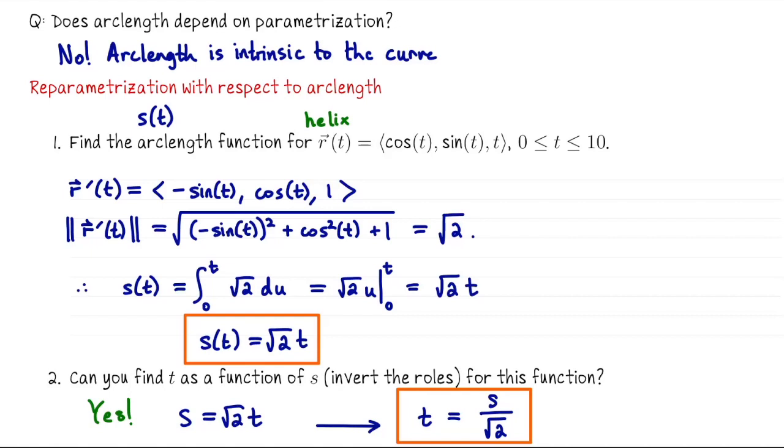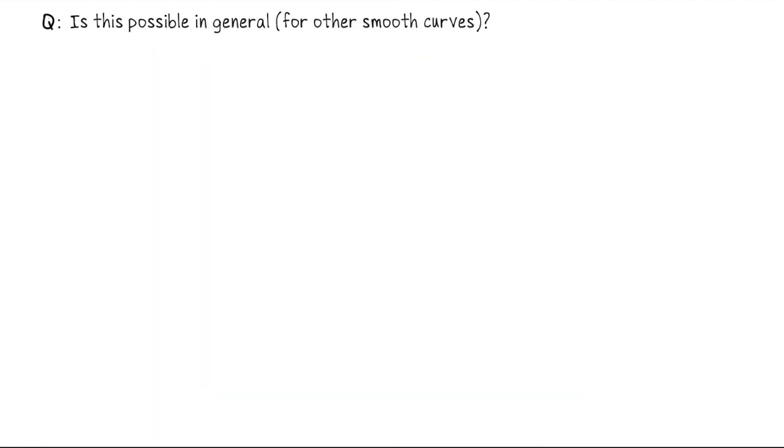Not every function is invertible. So next I want to discuss whether or not step 2 is always possible if we're planning to reparametrize a smooth curve with respect to arc length. So let's take a second to discuss whether this is always possible for other smooth parametrizations. And by this I mean step number 2. The answer is yes.